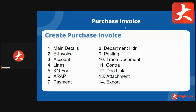For the purchase invoice, there are a few tabs. We have the main detail, the invoice tab, the account lines, knockoff for ER/AP (which is accounts receivable and accounts payable), payment, department header, posting, trace document, contra, dot link, attachment, and export. We will go through each of these in detail during the demo.